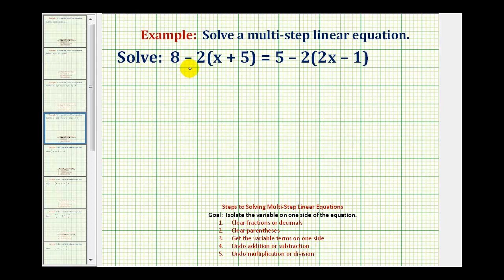And because we have minus two times the quantity x plus five, we could write this as plus negative two times this quantity, but it's easier just to think of distributing a negative two to the x as well as the positive five. On the right side of the equation, we'll think of distributing a negative two to the two x as well as the negative one or minus one.